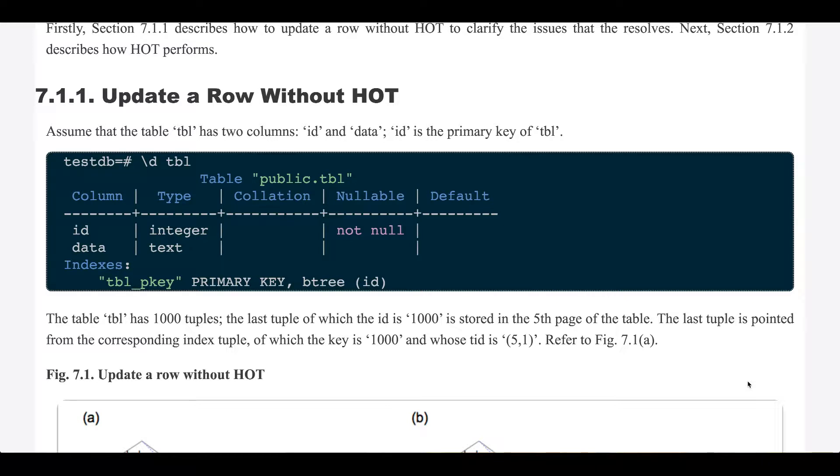Section 7.1.1: Update a row without HOT. Assume that the table has two columns, id and data. Id is the primary key of the table.